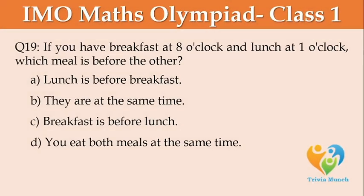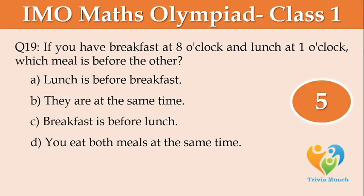If you have breakfast at 8 o'clock and lunch at 1 o'clock, which meal is before the other? A: Lunch is before breakfast. B: They are at the same time. C: Breakfast is before lunch. D: You eat both meals at the same time.